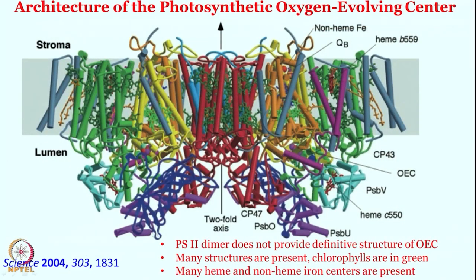Let us look at the crystal structure of the photosynthetic oxygen evolving center, or oxygen evolving complex. This is back in 2004 — this crystal structure was reported. Many structures are present as you can see: non-heme iron centers, heme centers, and cytochrome centers — many different centers are present. The one in green here is the photosystem II, and this is a great structure for photosystem II. This is the oxygen evolving complex or oxygen evolving center — this is the chloroplast structure in green.